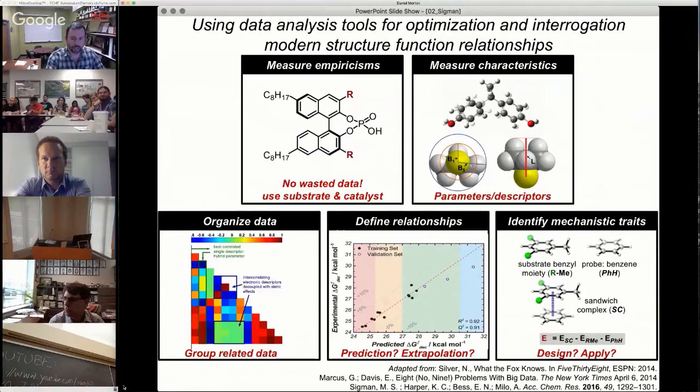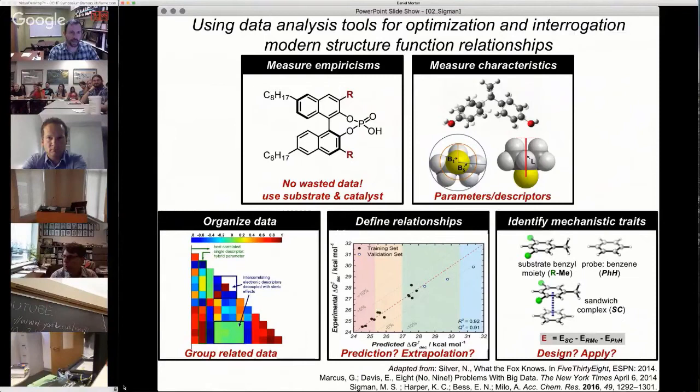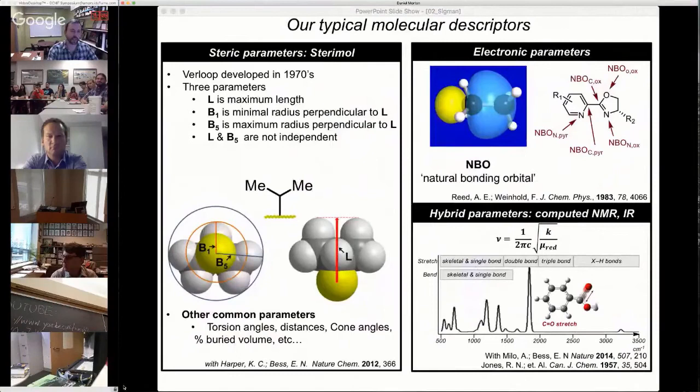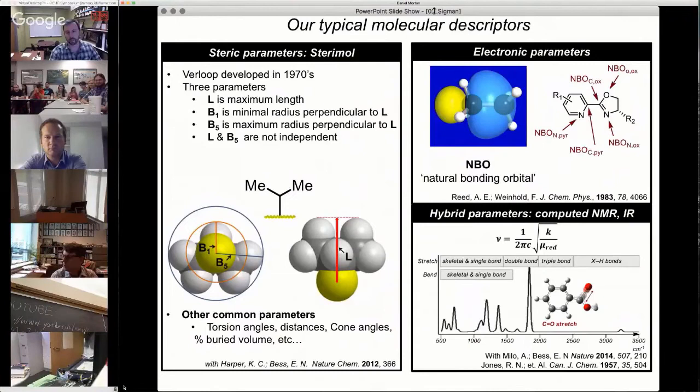The next slide shows you some of our standard parameter space that we start with. What we often do is we will compute using classic quantum mechanic type calculations, DFT, and we will then minimize structure, sometimes do conformational searches depending on the types of compounds we're looking at. We'll define a number of parameters. Some of these are going to be classic steric and origin type parameters. Some of these are going to be more electronically-driven parameters.